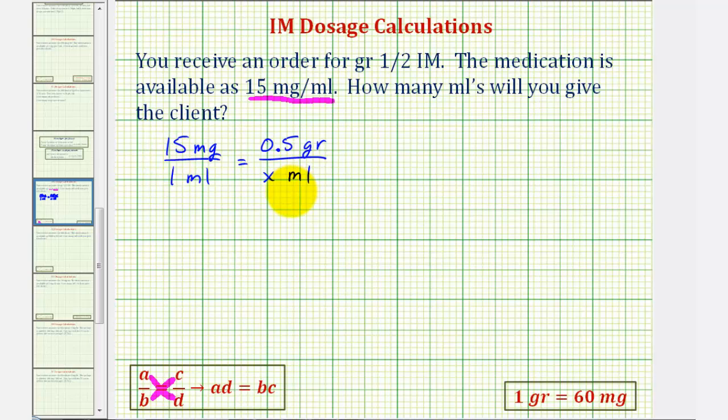Now we cannot cross multiply and solve for X in this form, because the units on top are not the same. Here we have milligrams and here we have grains. So we have to either convert milligrams to grains or grains to milligrams. Let's convert grains to milligrams using the conversion one grain equals 60 milligrams.